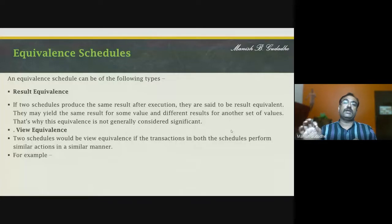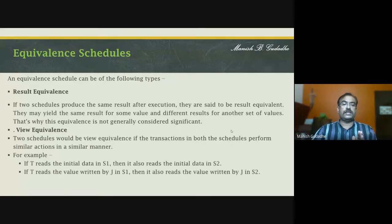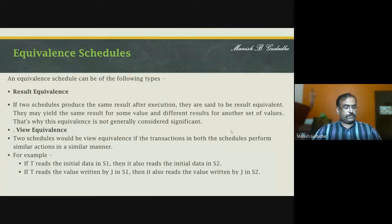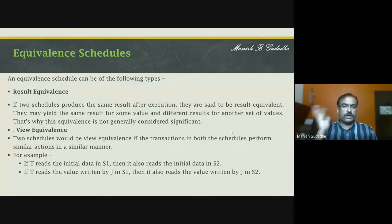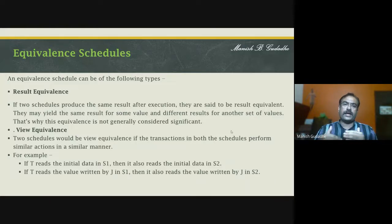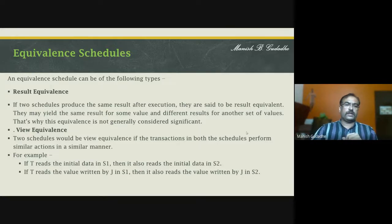Performing similar actions in a similar manner is called view equivalence. For example, if T1 reads the initial data in S1 and it also reads the initial data in S2, it can be said to be view equivalent. Similarly, if T reads the value written by some transaction in S1 and also performs the same action in S2, we say it is view equivalent — creating similar output at every stage of execution.